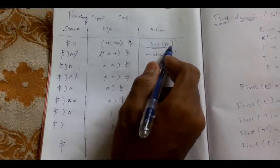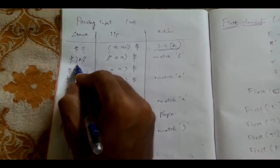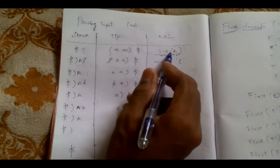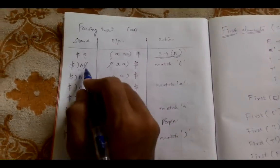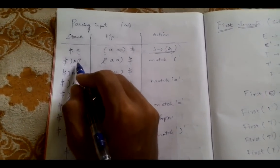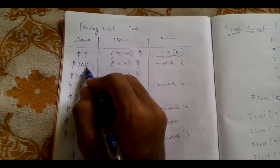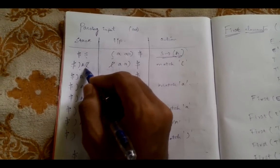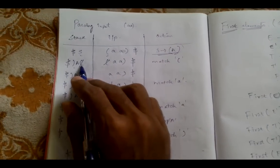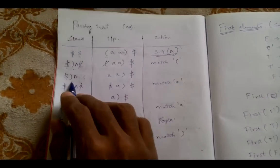We push in reverse order: first closing bracket, then A, then opening bracket — so opening bracket is at the top of the stack. Now the stack has open bracket and the input also has open bracket, so they match. Whenever there is a match, we pop that element from the stack and also from the input.